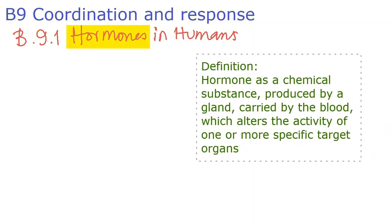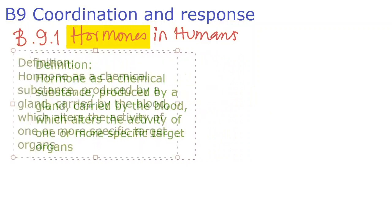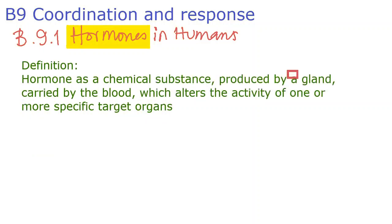Hormone can be defined as a chemical substance produced by a gland, carried by the blood, which alters the activity of one or more specific target organs. There are four important keywords in this definition which you have to learn.